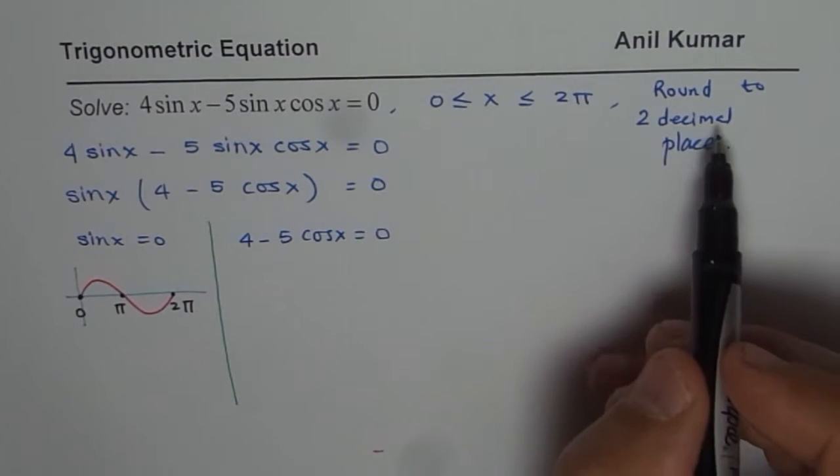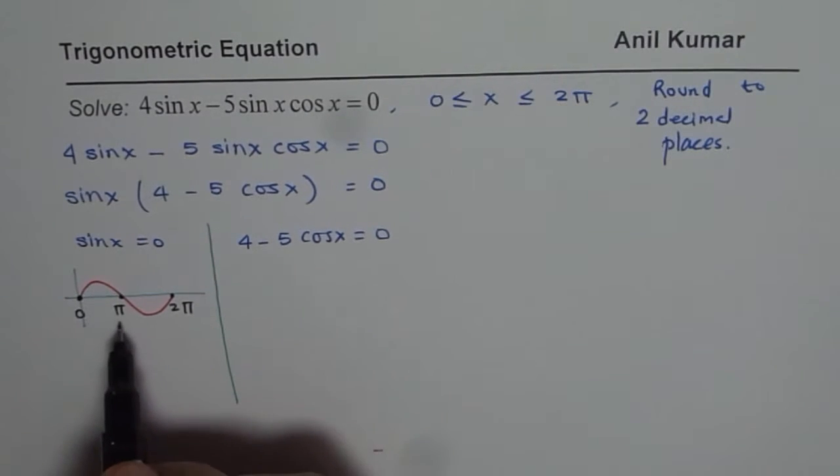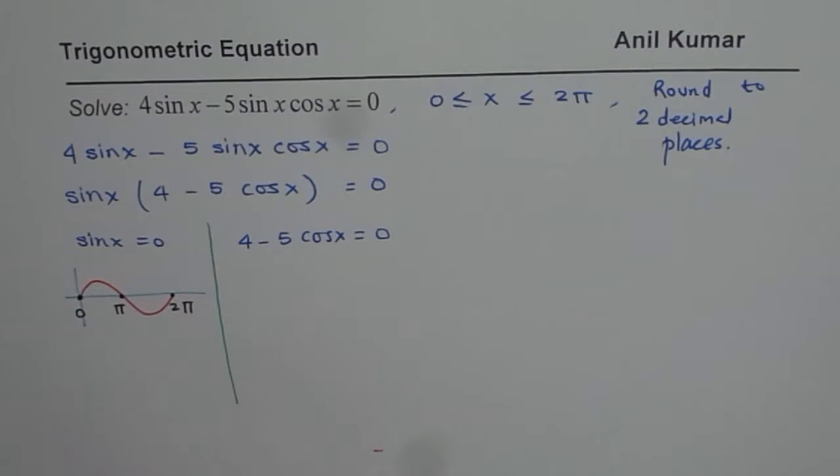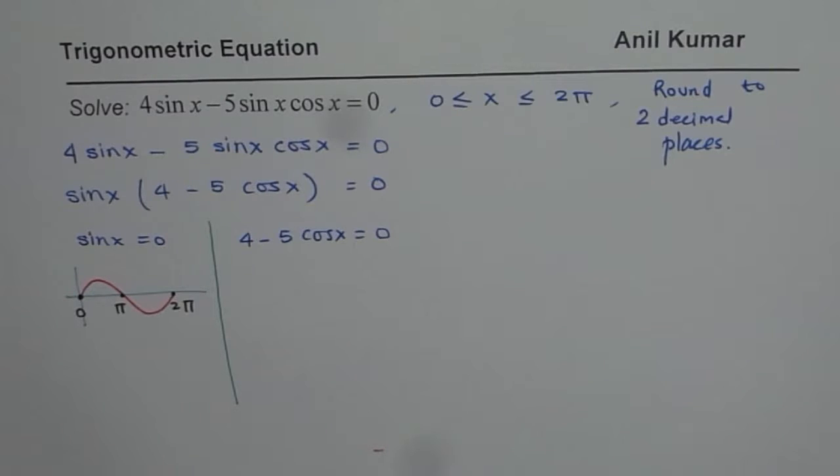But I changed the equation. I wrote round to two decimal places. So don't write just pi. You have to write round the value to two decimal places. So I am leaving it for now here. Let's continue further. So you can pause the video, write down your answer and then check with my solution.